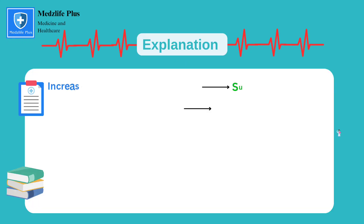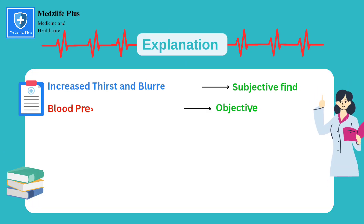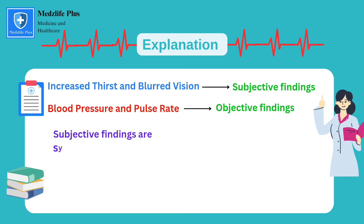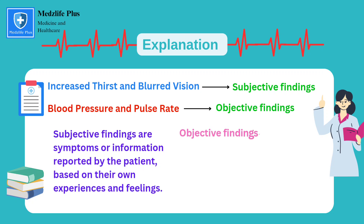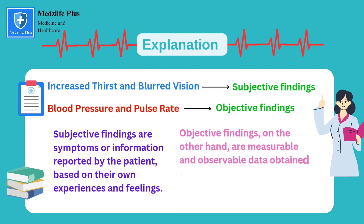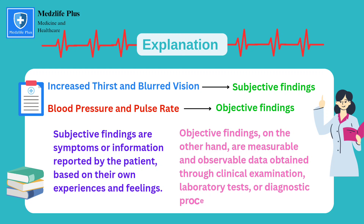Subjective findings include increased thirst and blurred vision, while blood pressure and pulse rate are included in objective findings. Subjective findings are symptoms or information reported by the patient based on their own experiences and feelings. Objective findings are measurable and observable data obtained through clinical examination, laboratory tests, or diagnostic procedures.